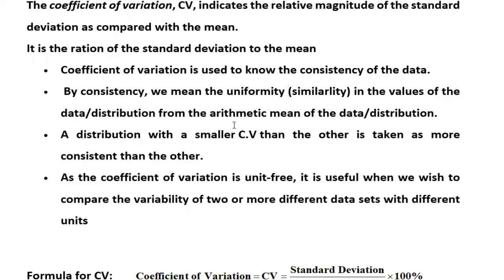Consider the income of people in different countries. In Bangladesh, income is normally measured in taka, while in the USA it is measured in dollars. You cannot directly compare income in taka and dollars because there is a large difference in units. But when you want to compare the variability using the coefficient of variation, you can compare because there is no unit. So the coefficient of variation, denoted CV, is very important.